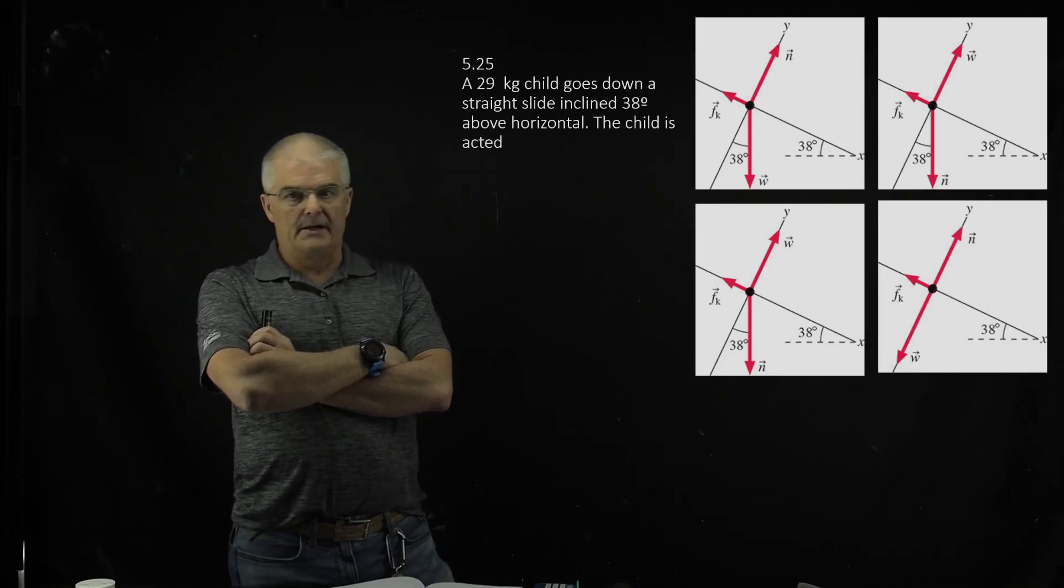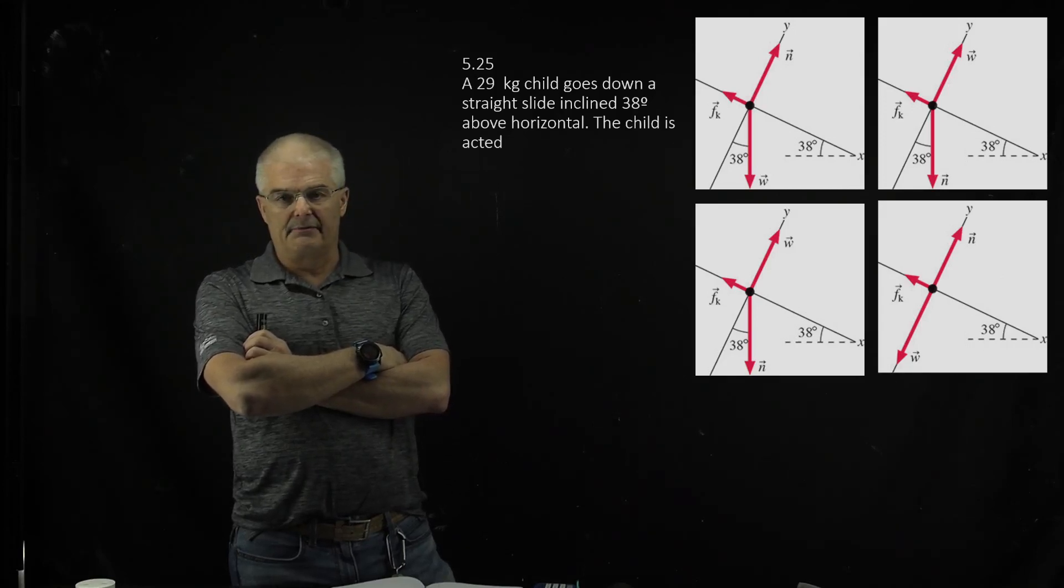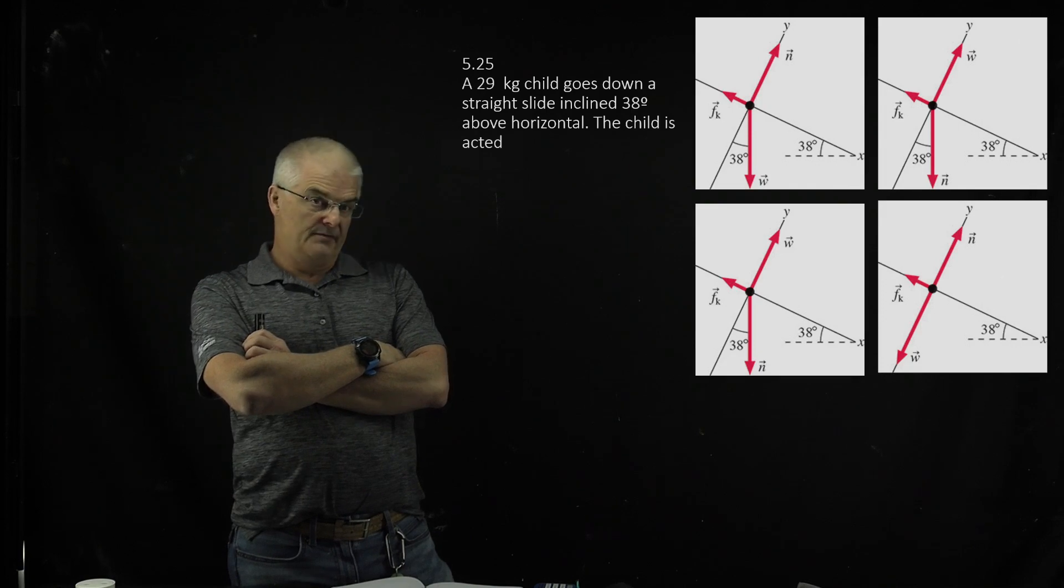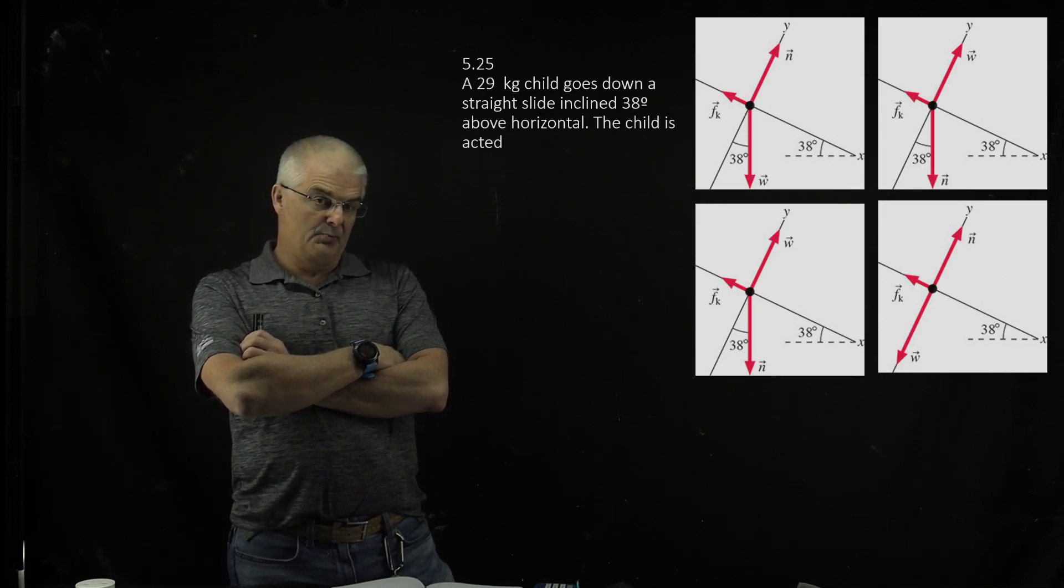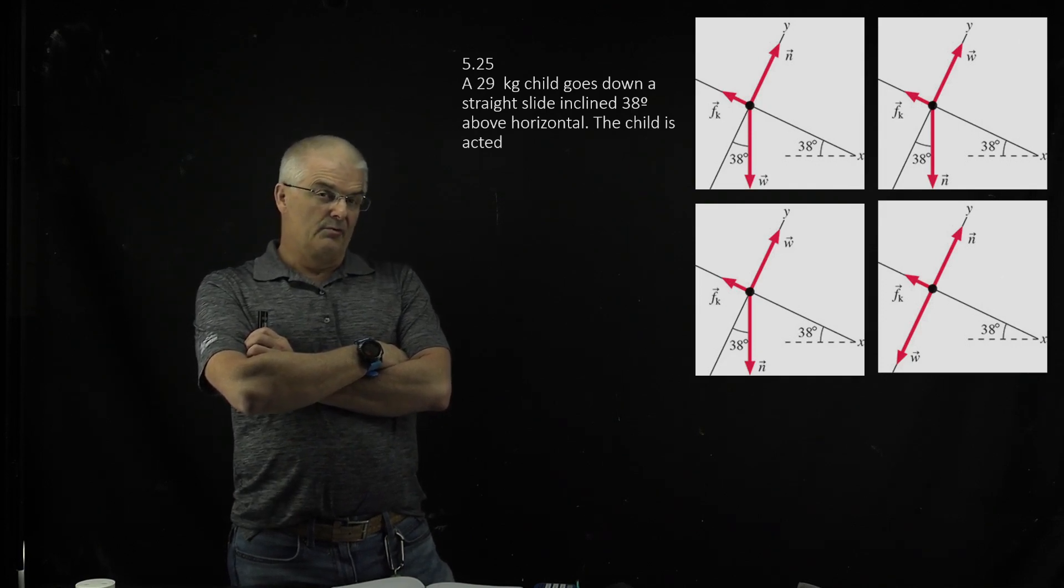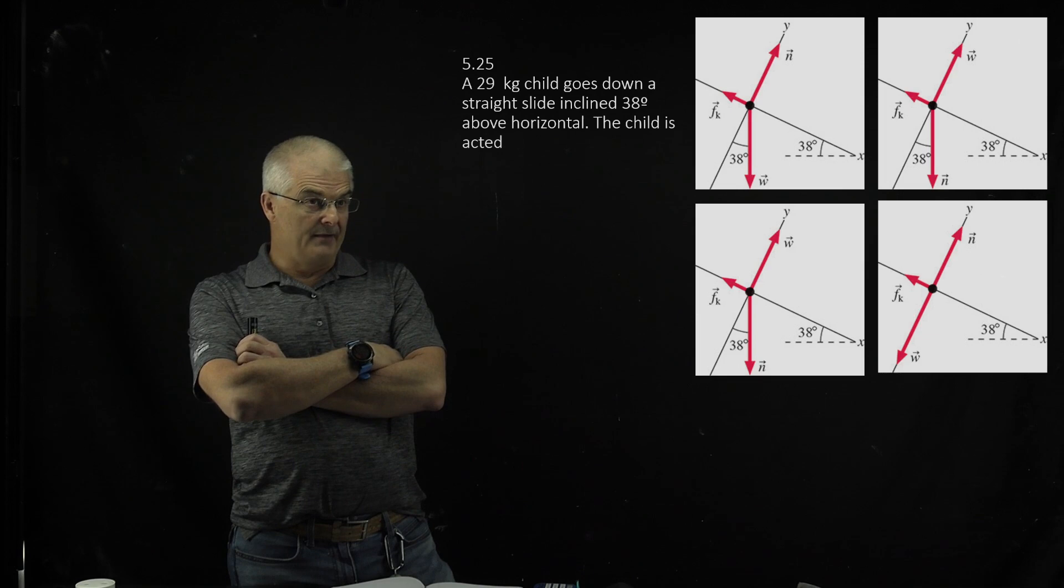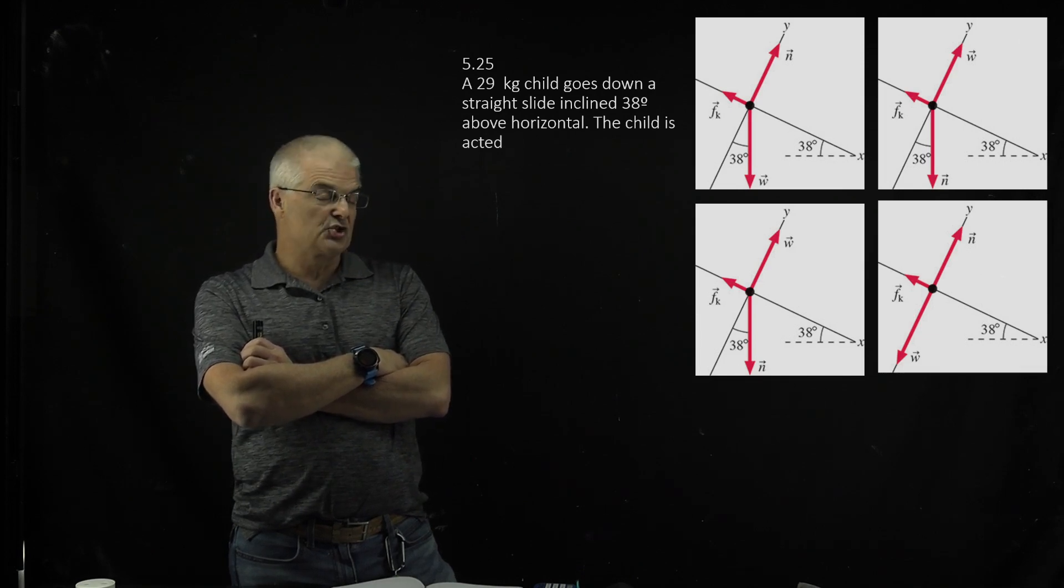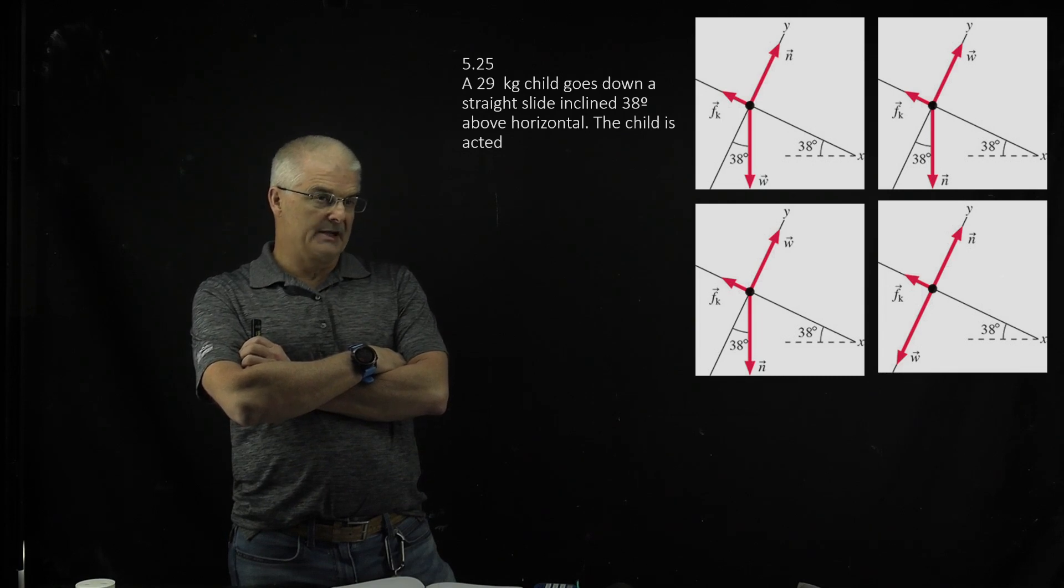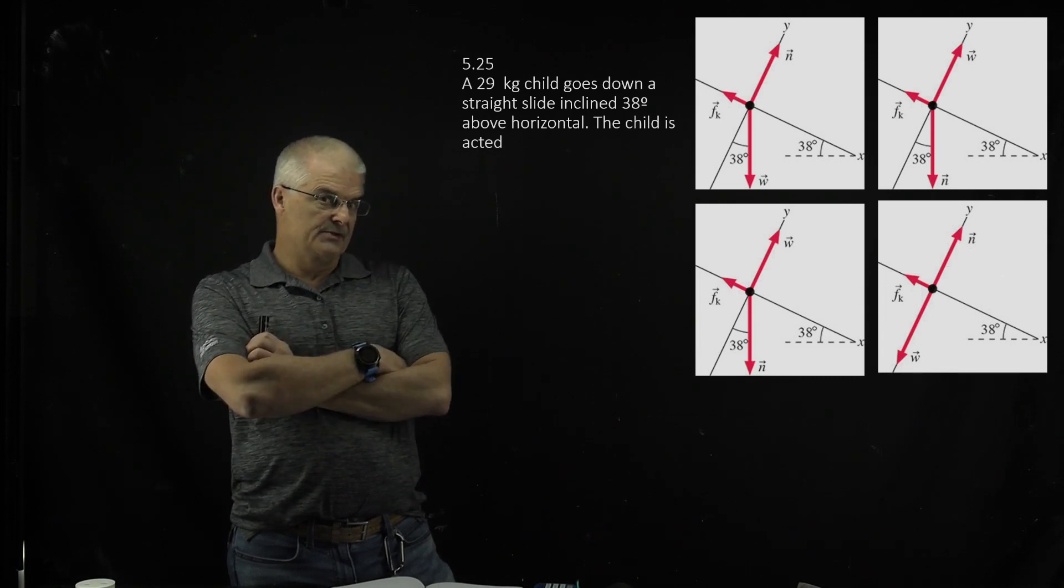So you've got the 29 kilogram kid, he's on an incline plane of 38 degrees. Which of these diagrams is the appropriate one? Remember, normal force is always perpendicular to the surface and gravity is always down, straight down. Hopefully that will help you figure out which box over here is correct.